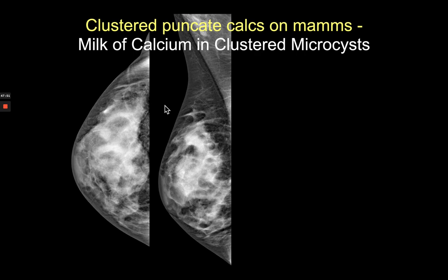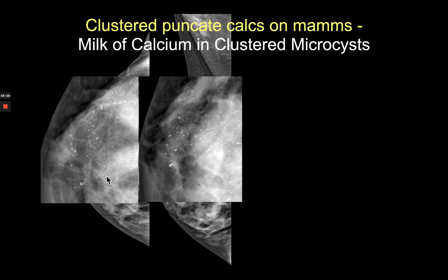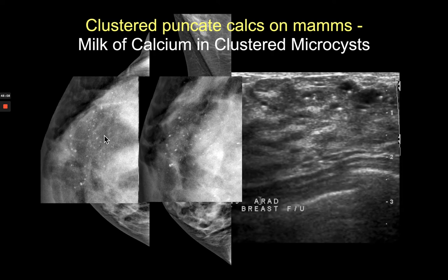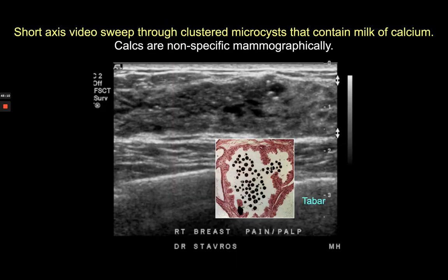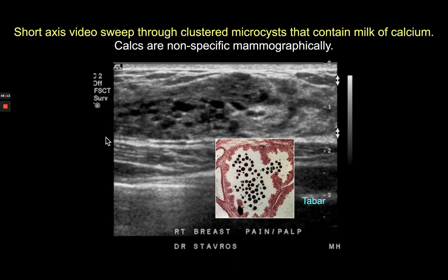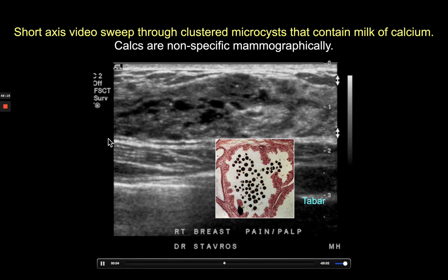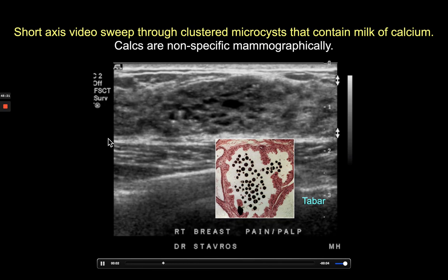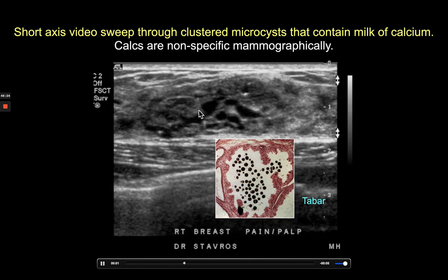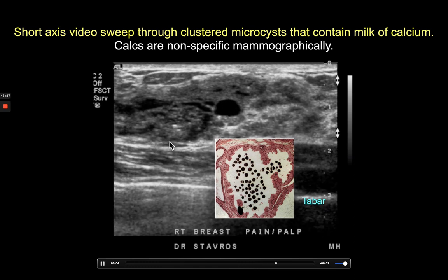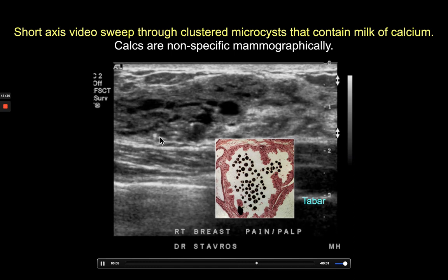Mammography can show smaller, more numerous calcifications and is generally better for characterizing them than ultrasound. Occasionally, calcifications that are mildly suspicious on mammography can be more definitively characterized as benign on ultrasound — specifically when we see combinations of calcium oxalate and milk of calcium in clustered microcysts, with dependent milk of calcium and/or calcium oxalate crystals visible at the bottom of many microcysts on a video sweep.